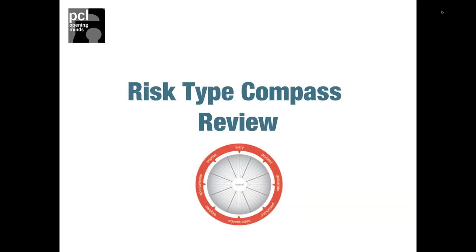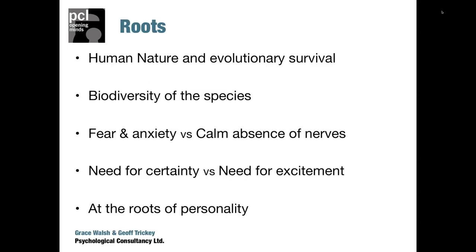First then: a Risk Type Compass review. This refers to its roots — the emphasis on the substance behind the Risk Type Compass and its relationship to human nature. Human nature and evolutionary survival depend on achieving a balance between taking risks and not taking risks. Either extreme — too many risks or too few — and you may not last long. That applies to humans over evolutionary time, to every other creature or animal, and the same for organizations.